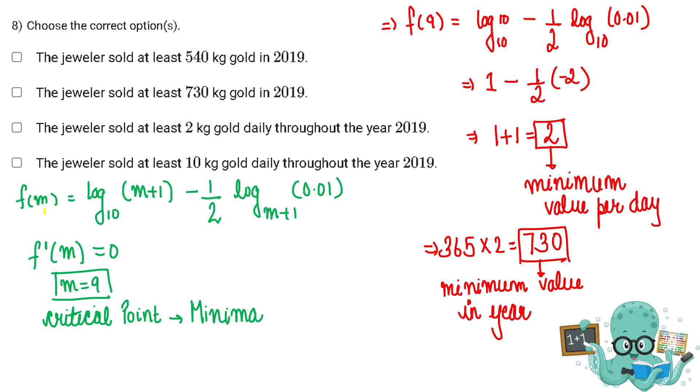हमने function का differentiate किया था and उसको 0 के बराबर किया था because इससे हमें critical point मिलता है. हमें m equals nine मिल गया था. m equals nine is a critical point but हमें यह नहीं पता चला था कि minima है या maxima. So for that हमने 9 से बड़ा एक number लिया था, 9 से छोटा एक number लिया था और वहां पे functions की value check की.